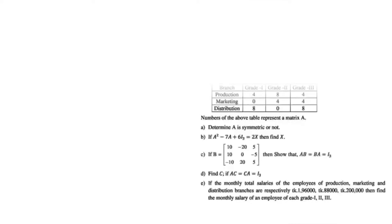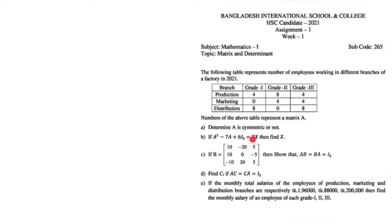The first question asks us to determine matrix A, then determine whether A is a symmetric matrix or not. To determine this, we need to know what a symmetric matrix is. If we interchange the rows into columns and the columns into rows, and the matrix before exchanging and after exchanging become equal, then that matrix is known as a symmetric matrix.